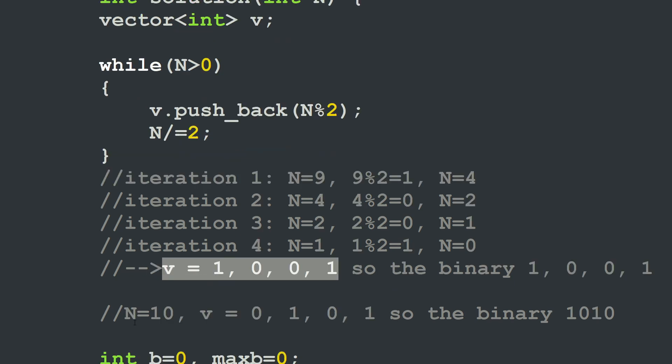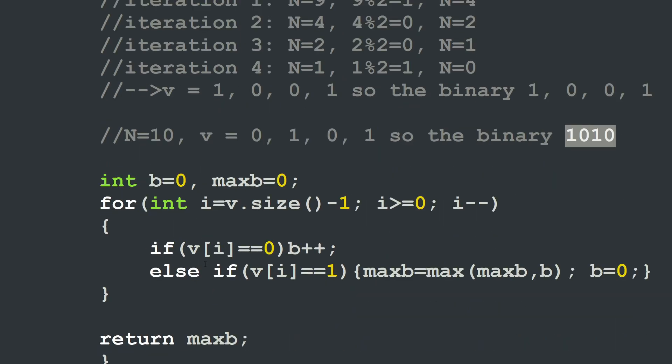If you take, for example, n equal to 10, your vector will be 0101. So the binary number 10 is 1010. So this should be taken into account when we are continuing our program.